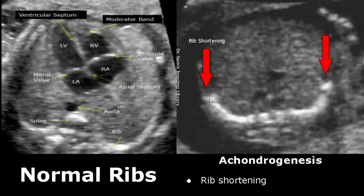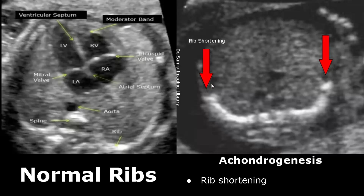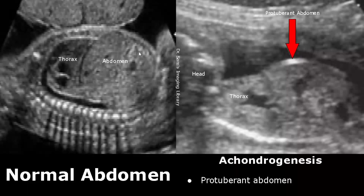The normal ribs are seen here and they also produce some shadowing on the sides. But in this image we see short ribs and no shadowing on both sides. This image shows the normal chest and abdomen. Another feature is a protuberant abdomen that is bulging out, which usually occurs along with a small thorax.